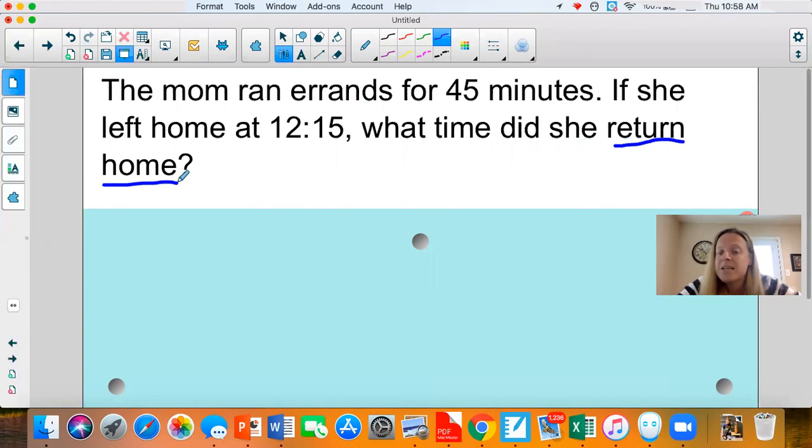It also tells me that she ran the errands for 45 minutes. So that is the amount of time she took. It says she left home at 12:15. So if she's leaving her house at 12:15, that is not the time that she returns, but that is going to be our start time.